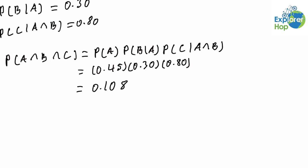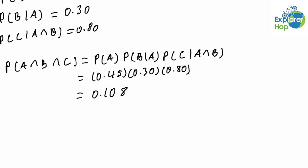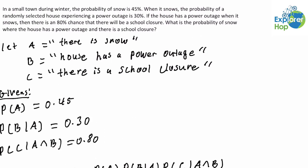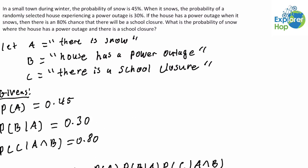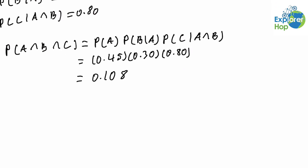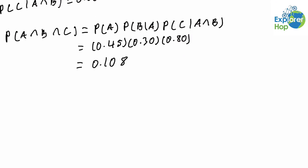Which is equal to 0.108. And that gives us the probability of the intersection of all three events, which is the probability of there being snow where the house has a power outage and there is a school closure. And that's it for this example. Thank you for joining us. See you in the next lesson.